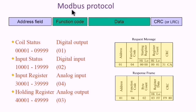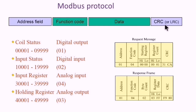The Modbus message starts with the address field, then the function code, followed by the data to be sent or received, and finally the error checking field. CRC is used by Modbus RTU, and LRC is used by Modbus ASCII.